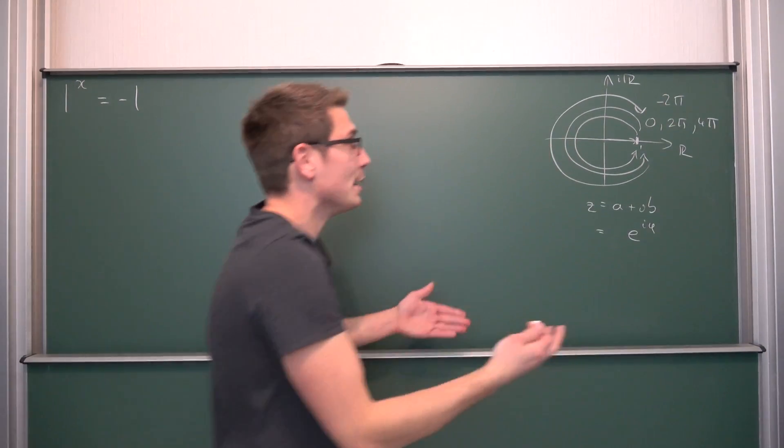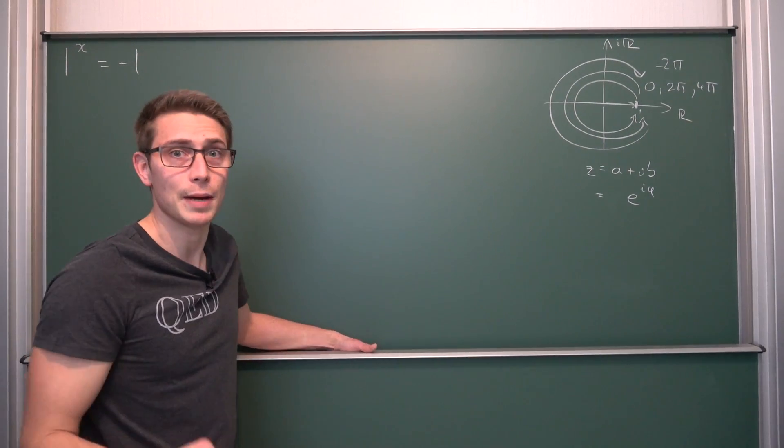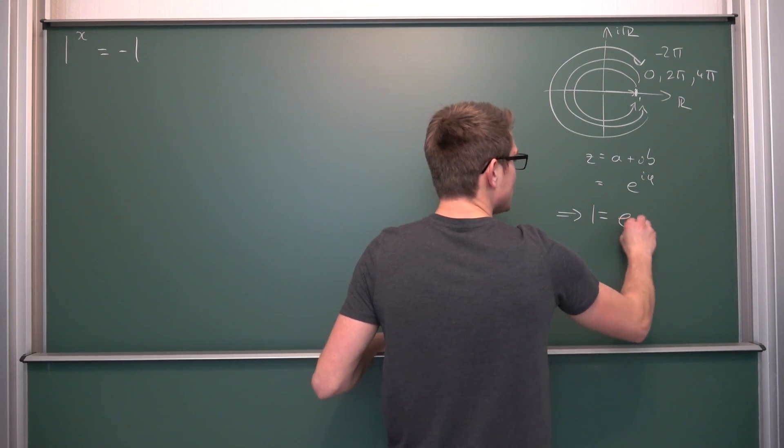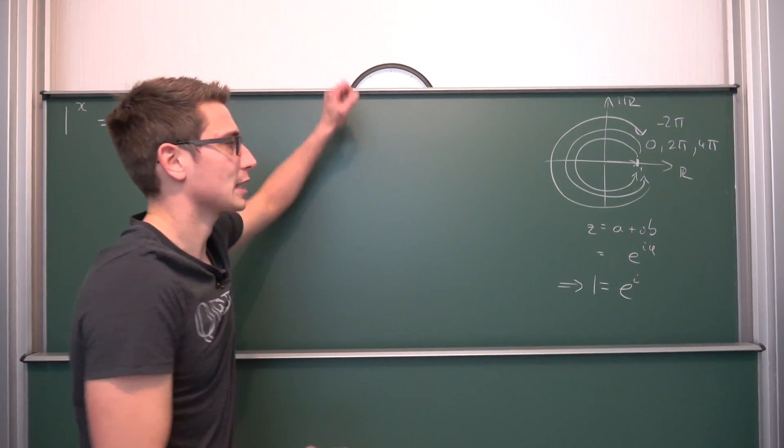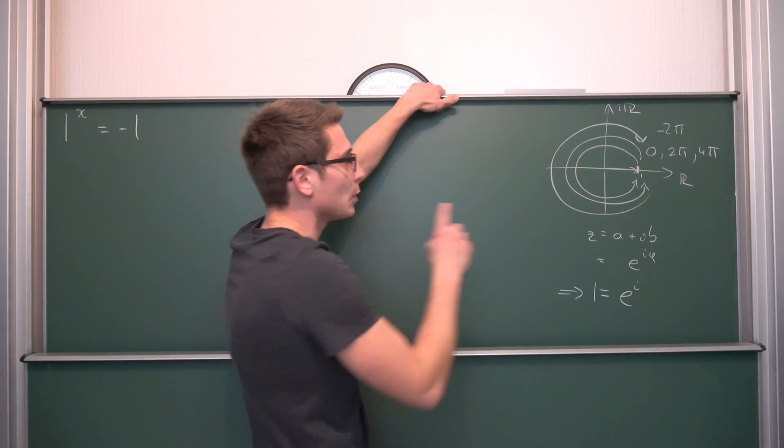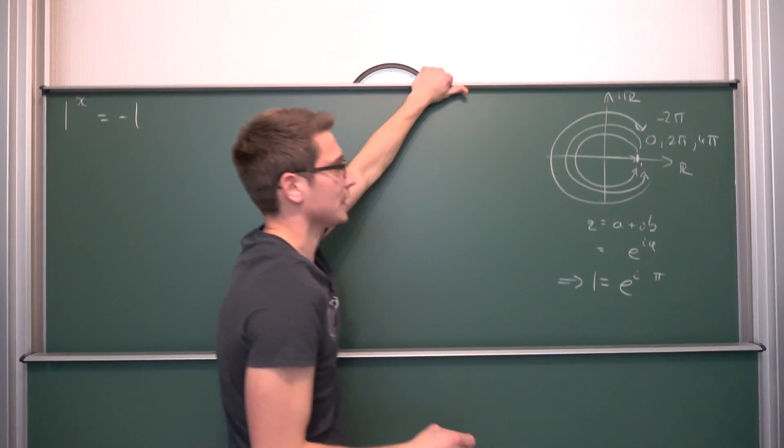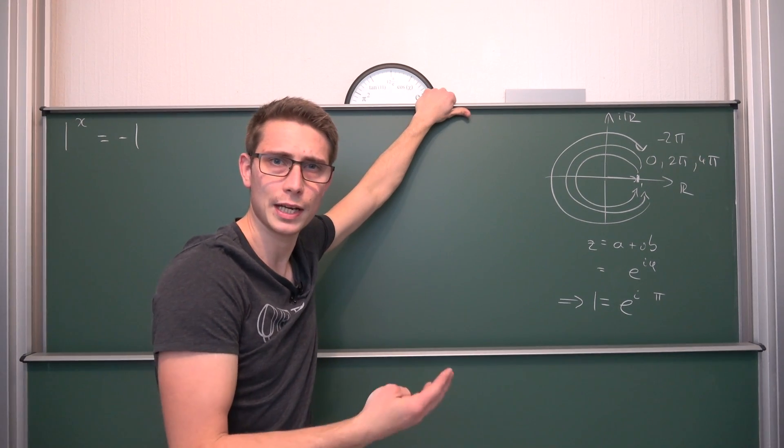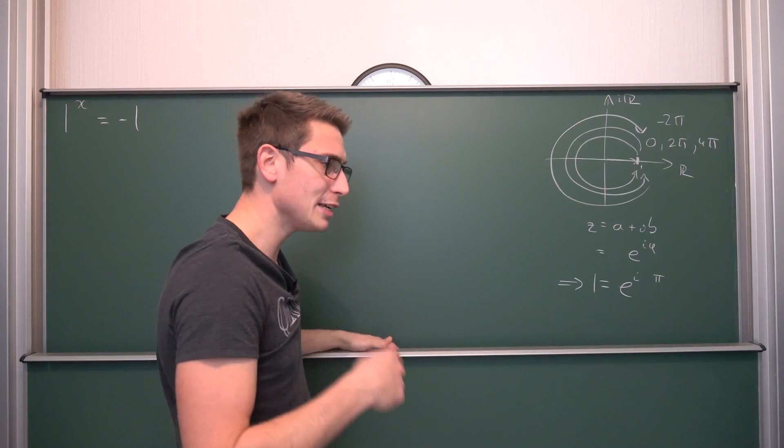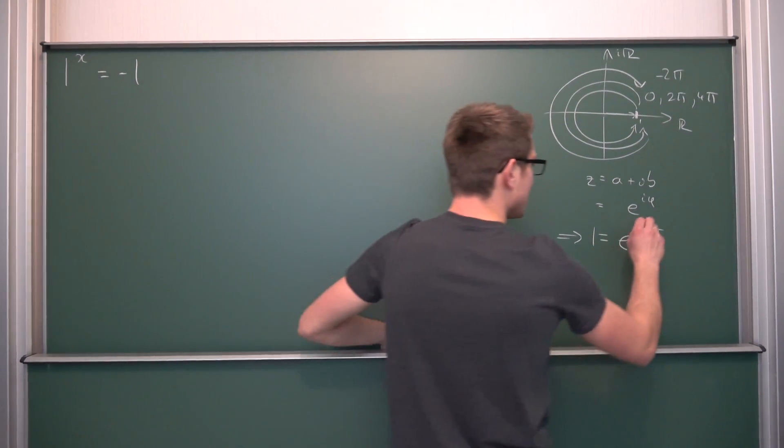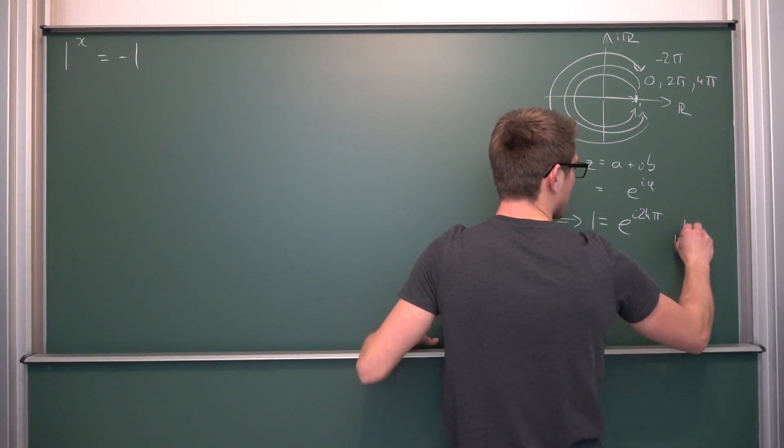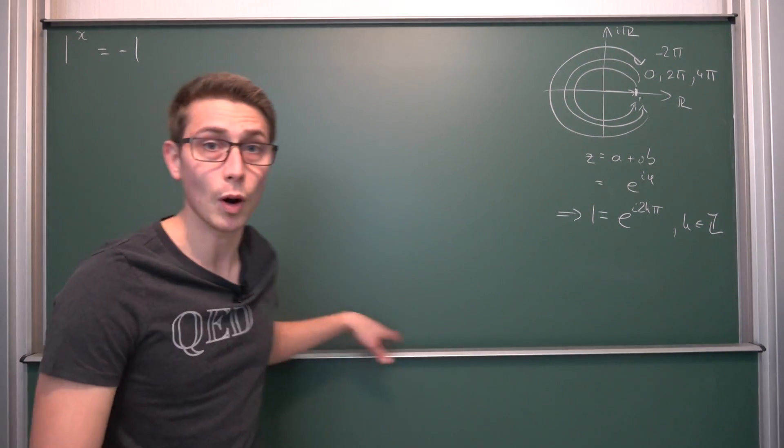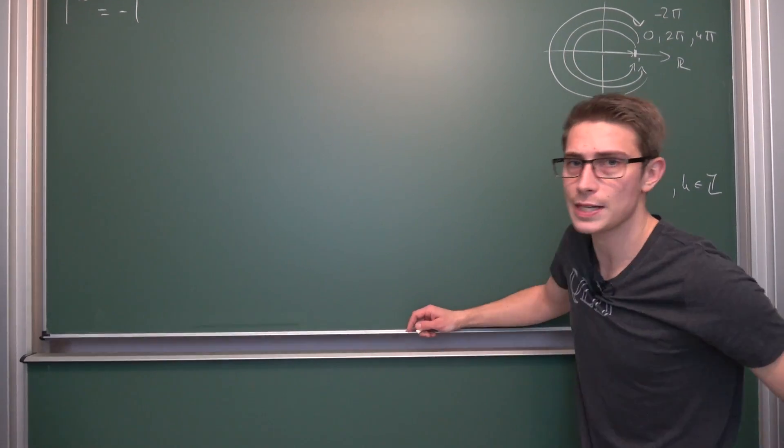Meaning, the number 1 can be expressed in infinitely many different ways as a complex number. Namely, the number 1 is the same as e to the i times 2kπ, where k is the element of the positive and negative integers. And this right here, ladies and gents, is the number 1. And we can plug it into our equation that we got up here.